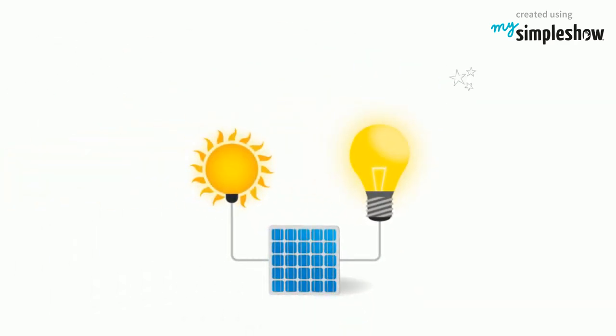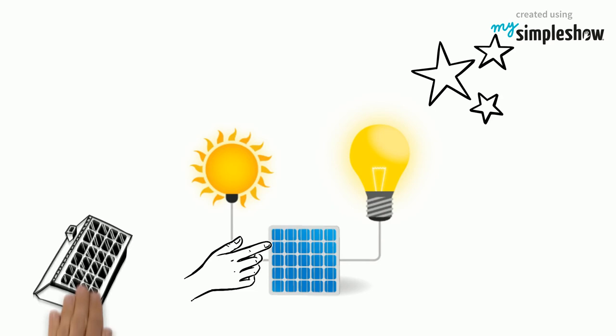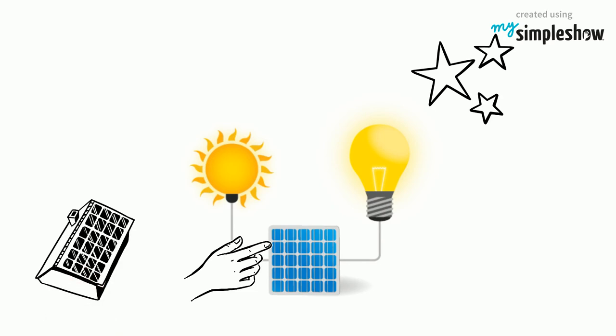They do this by exciting electrons in silicon cells using the photons of light from the sun. Most of the time, these panels are placed on the roof in order to get as much exposure to the sun as possible.